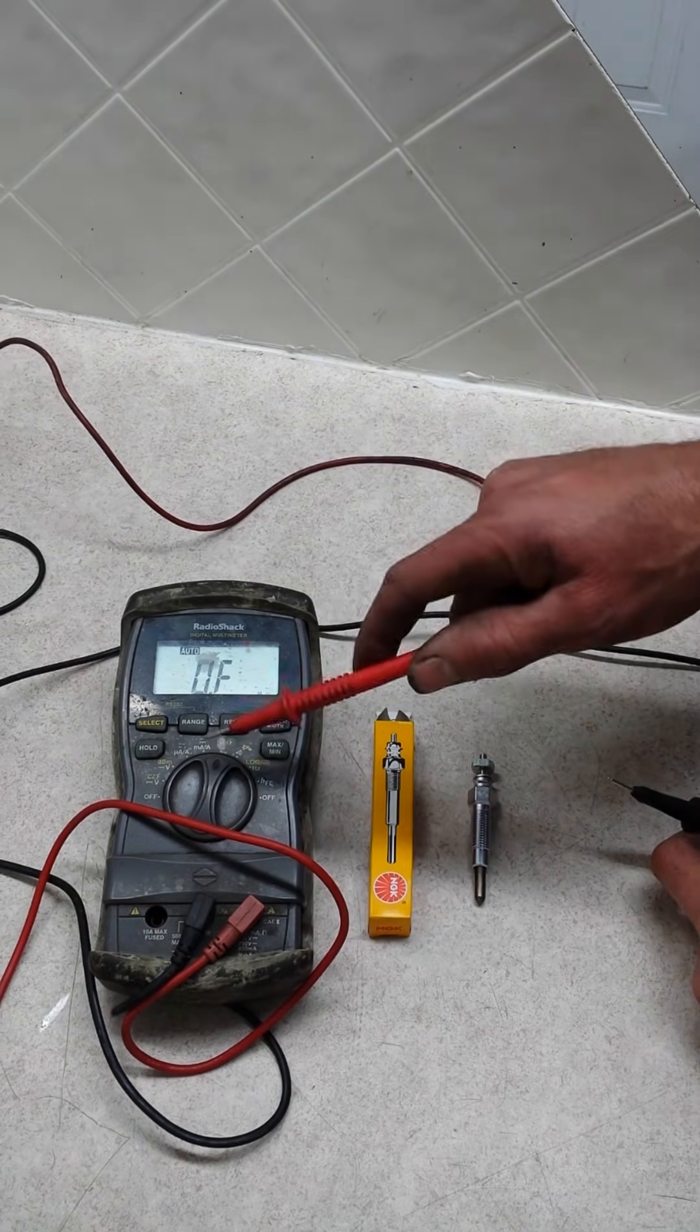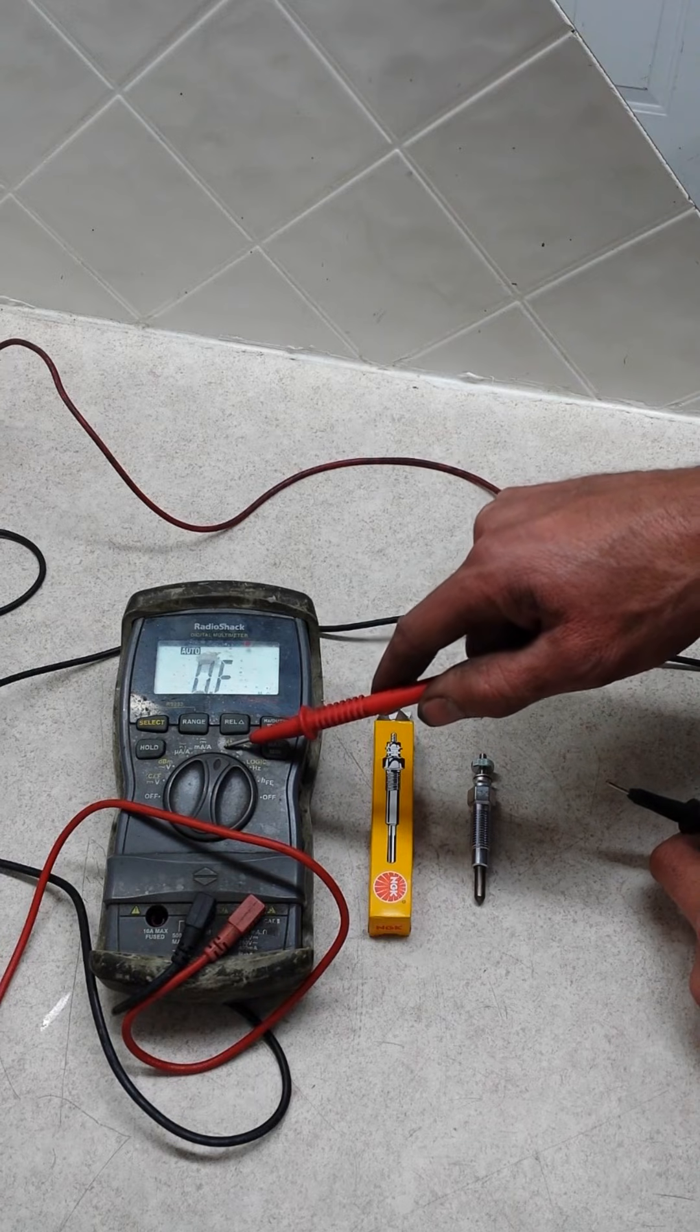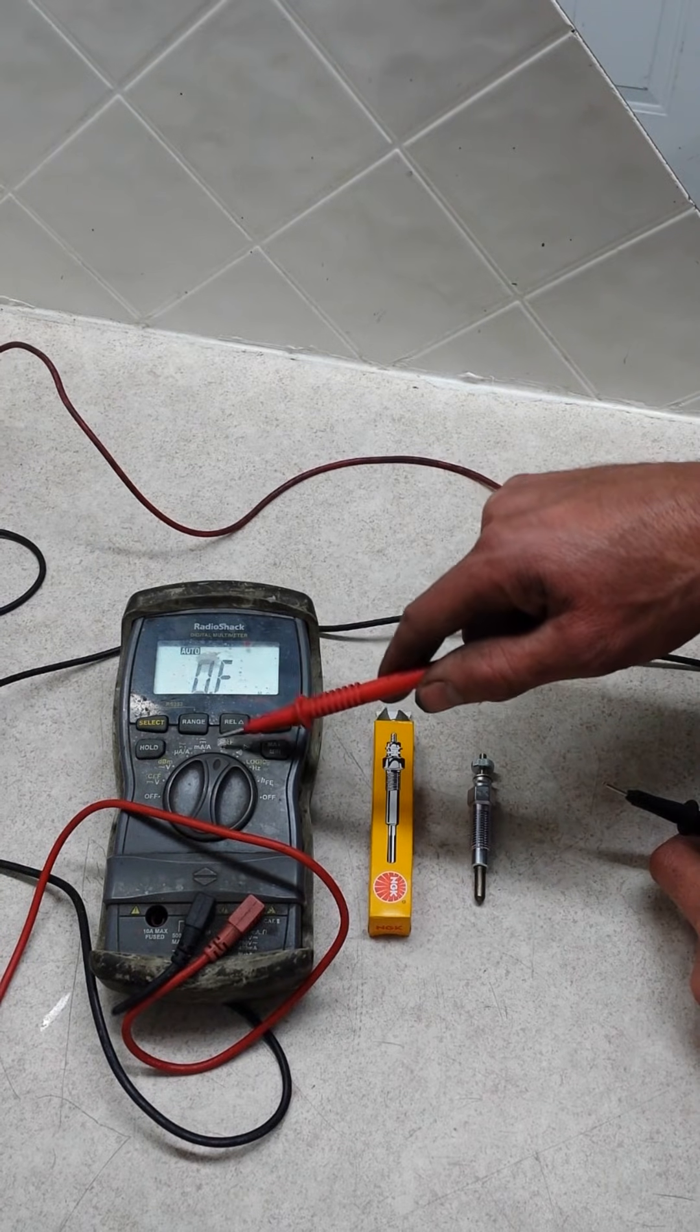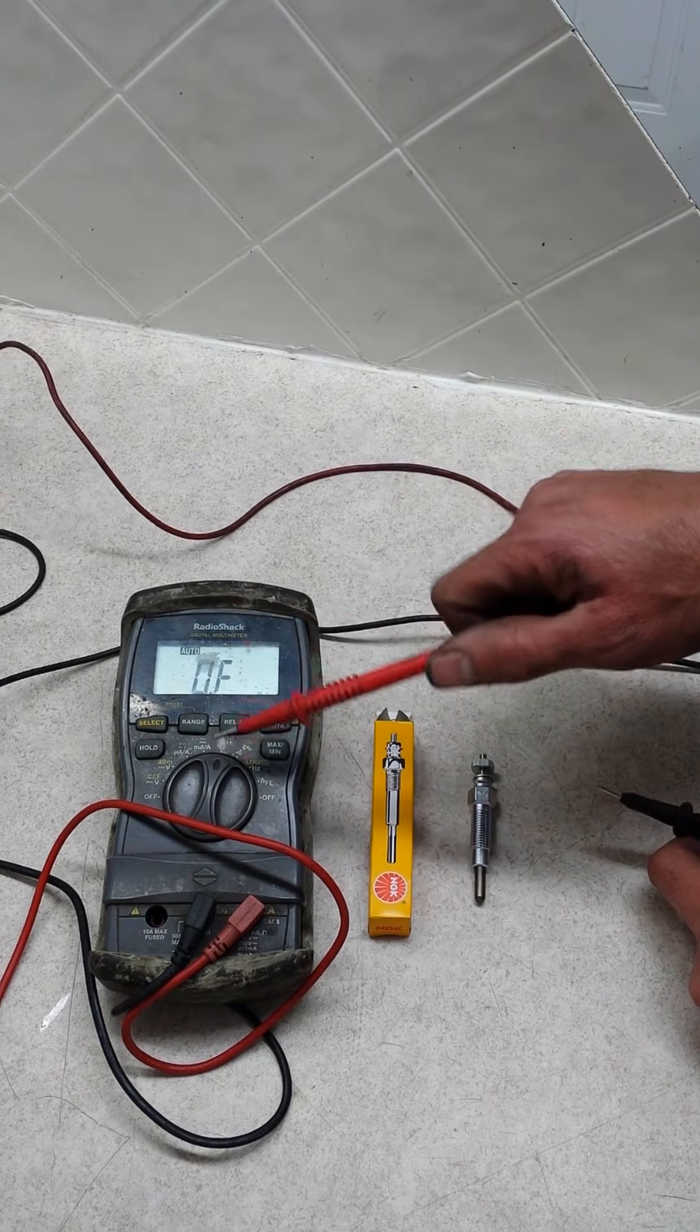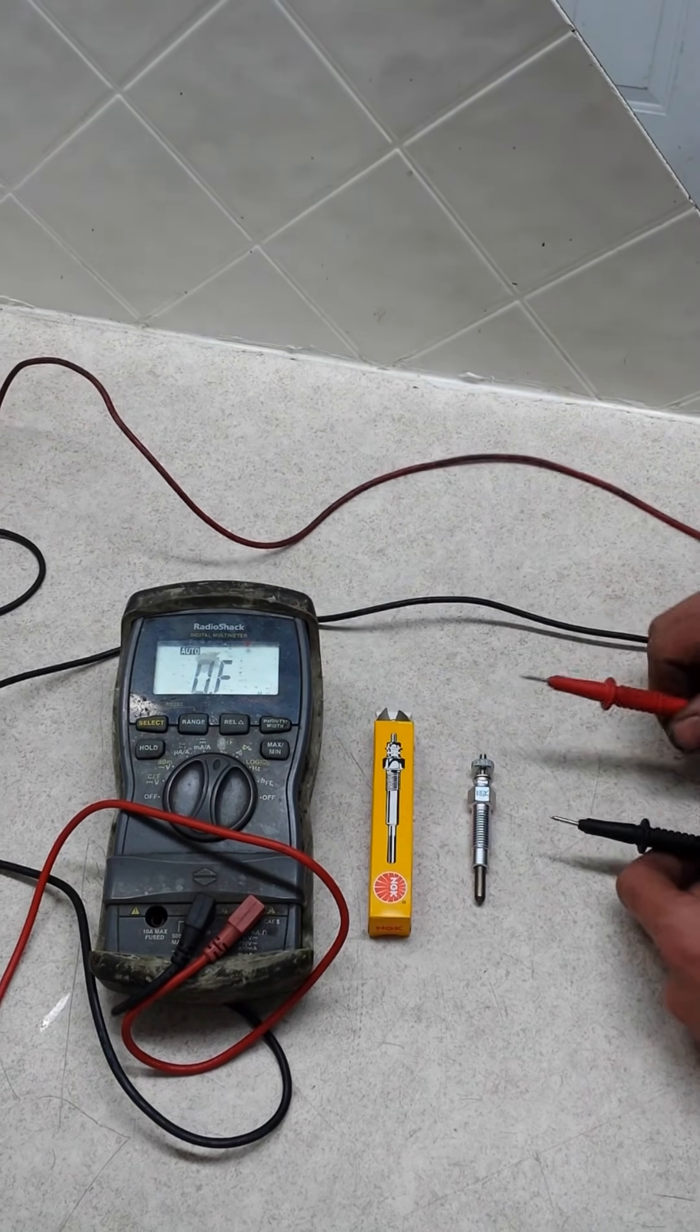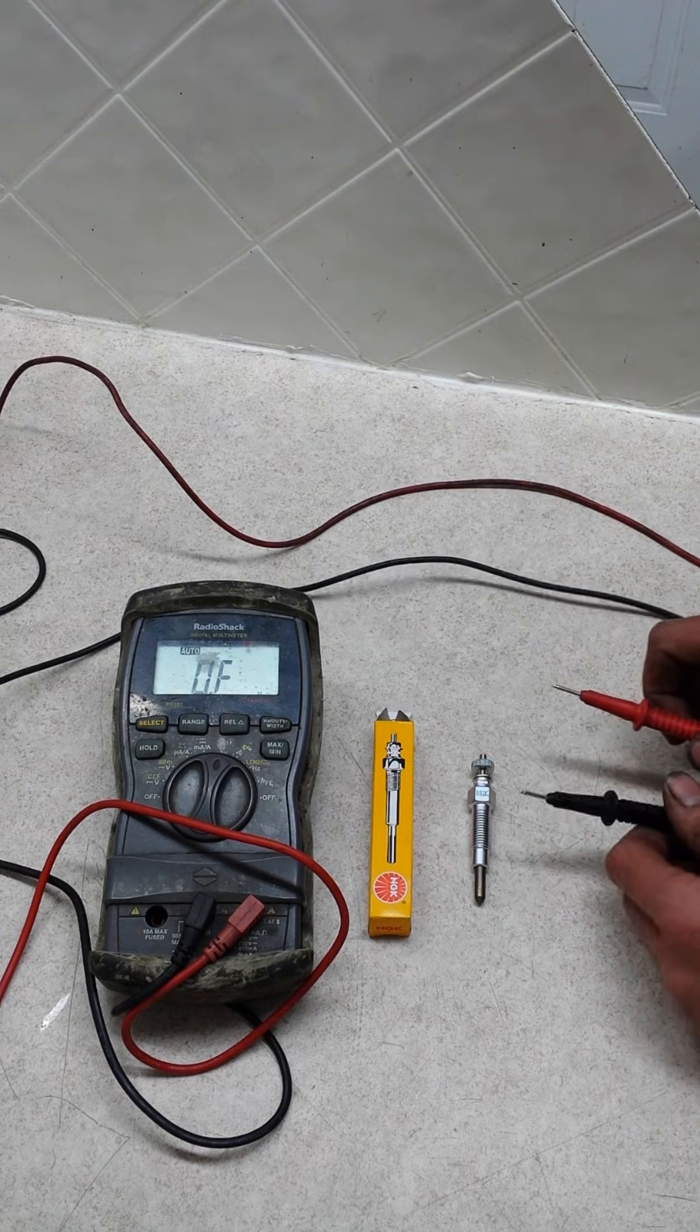For this simple test, I have my multimeter set on the ohm reading. This ohm tester has an automatic feature. If yours doesn't, put it on the lowest setting because these generally test down towards one ohm.